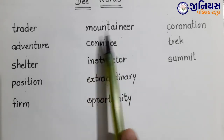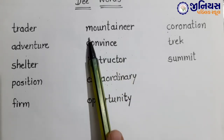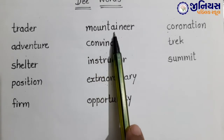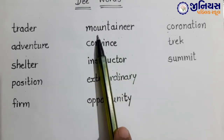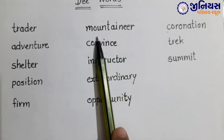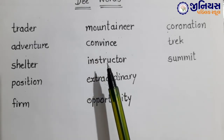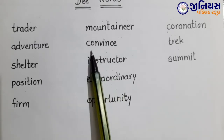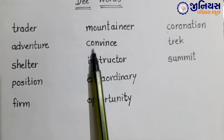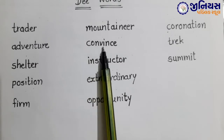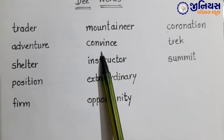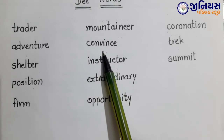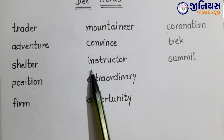Next: mountaineer. M-O-U-N-T-A-I-N-E-E-R. Mountaineer. Mountaineer means parvita rohi. Next one: convince. C-O-N-V-I-N-C-E. Convince. Convince means samjana, viswasdilana.